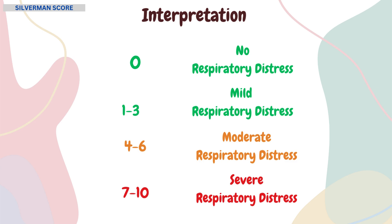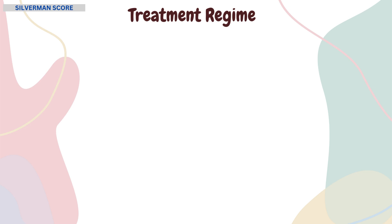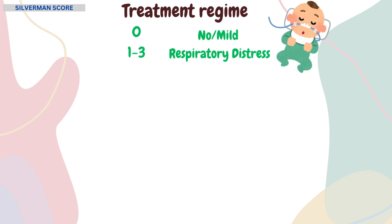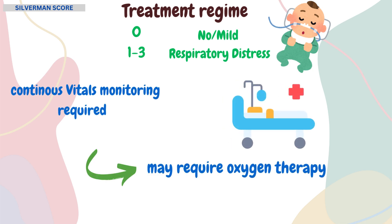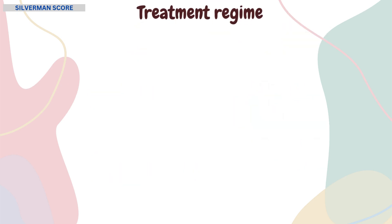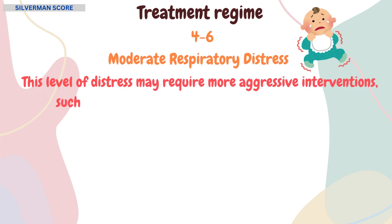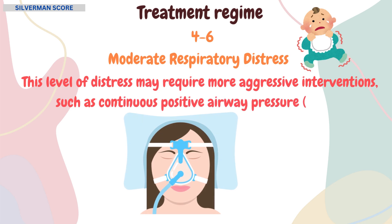The infant or newborn may require immediate medical attention. Let's briefly understand the treatment for mild, moderate, and severe RDS. If the score falls between 0 to 3, the newborn has mild or no respiratory distress and requires continuous vitals monitoring, and may sometimes require oxygen therapy. If the score falls between 4 to 6, the newborn has moderate respiratory distress, which may require more aggressive interventions such as CPAP — continuous positive airway pressure.